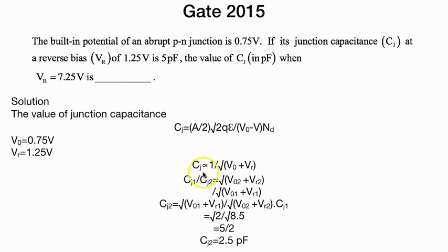If we put both the values, then we get C_J2 equals 2.5 picofarads. That's not a tough question—you just need to put the exact formula and try to get your answer.